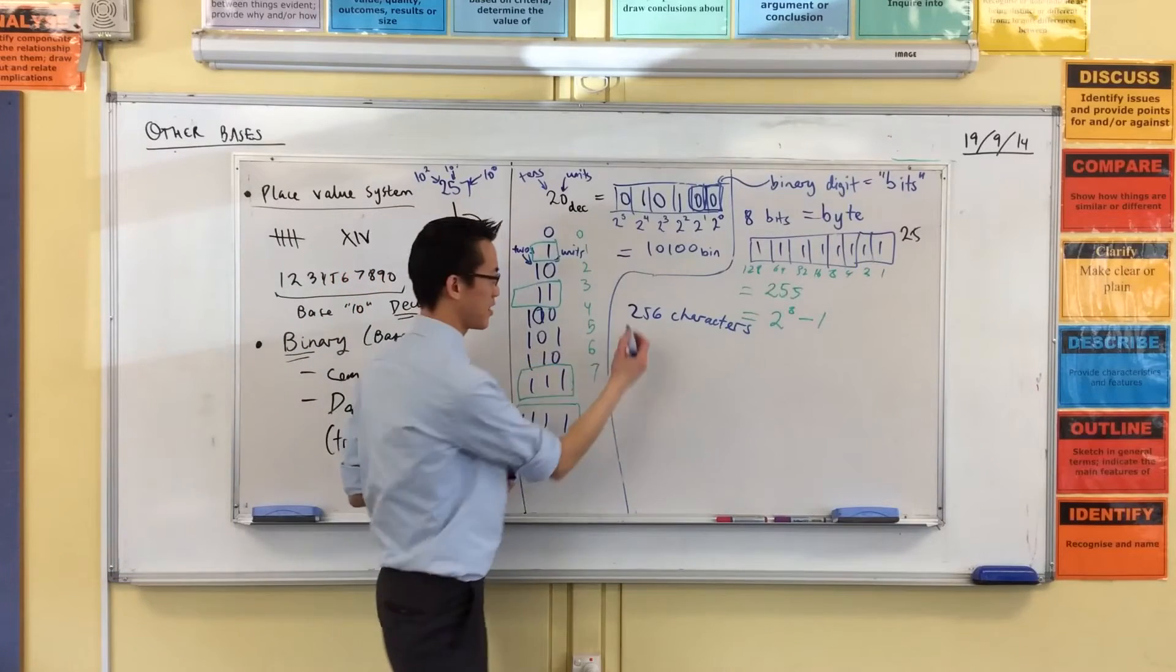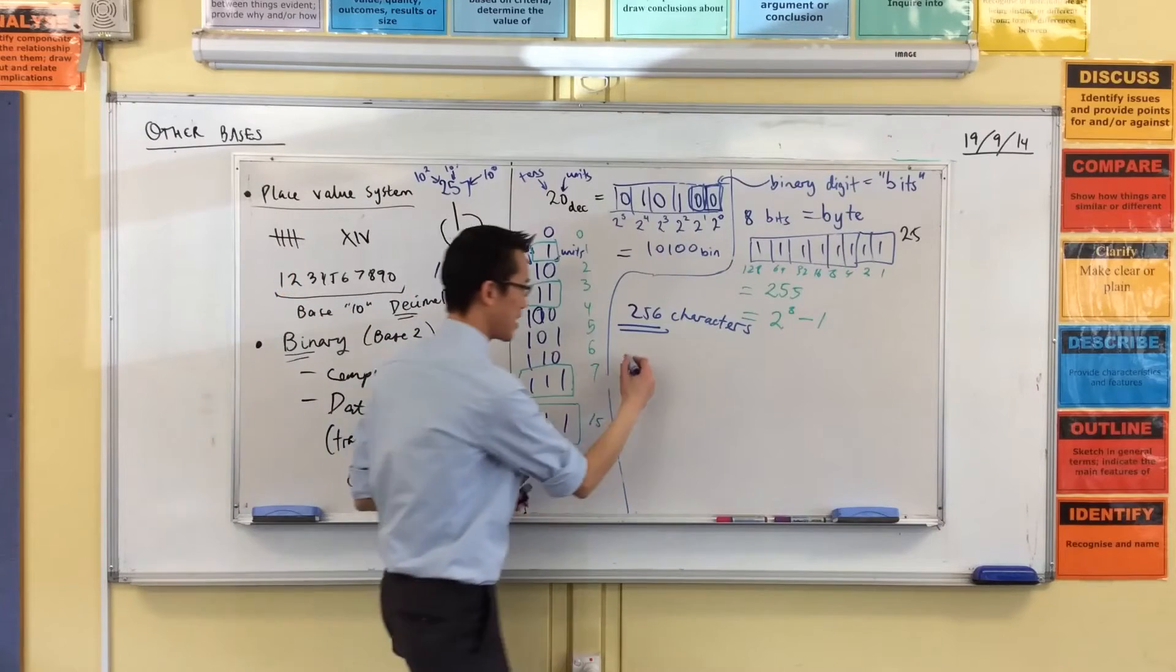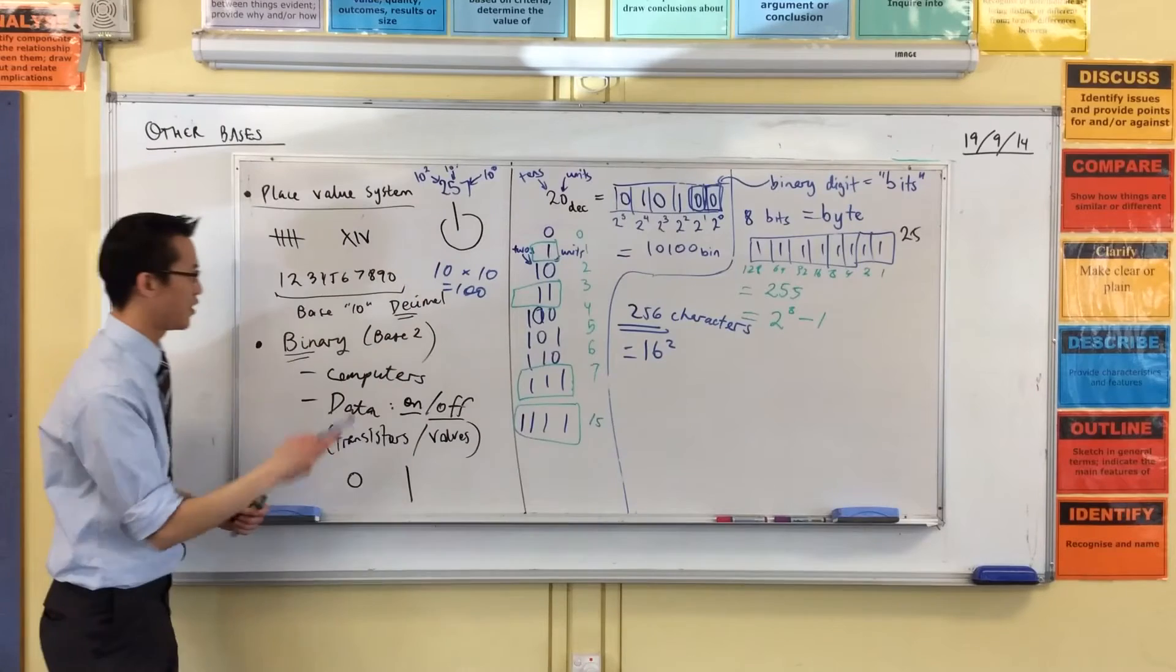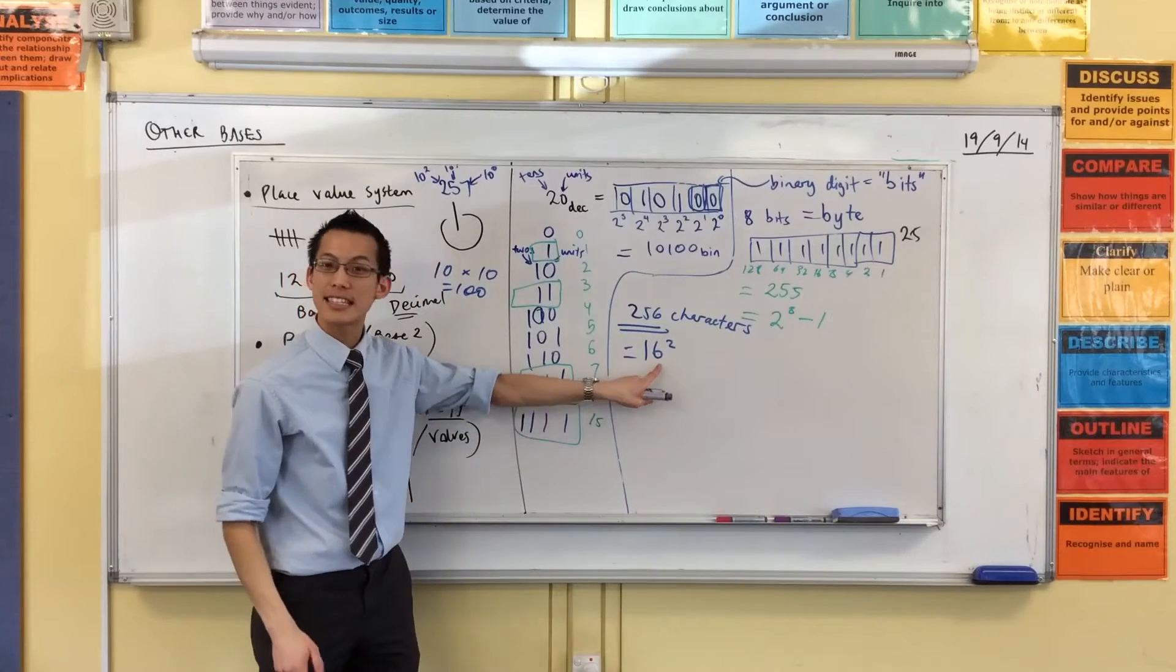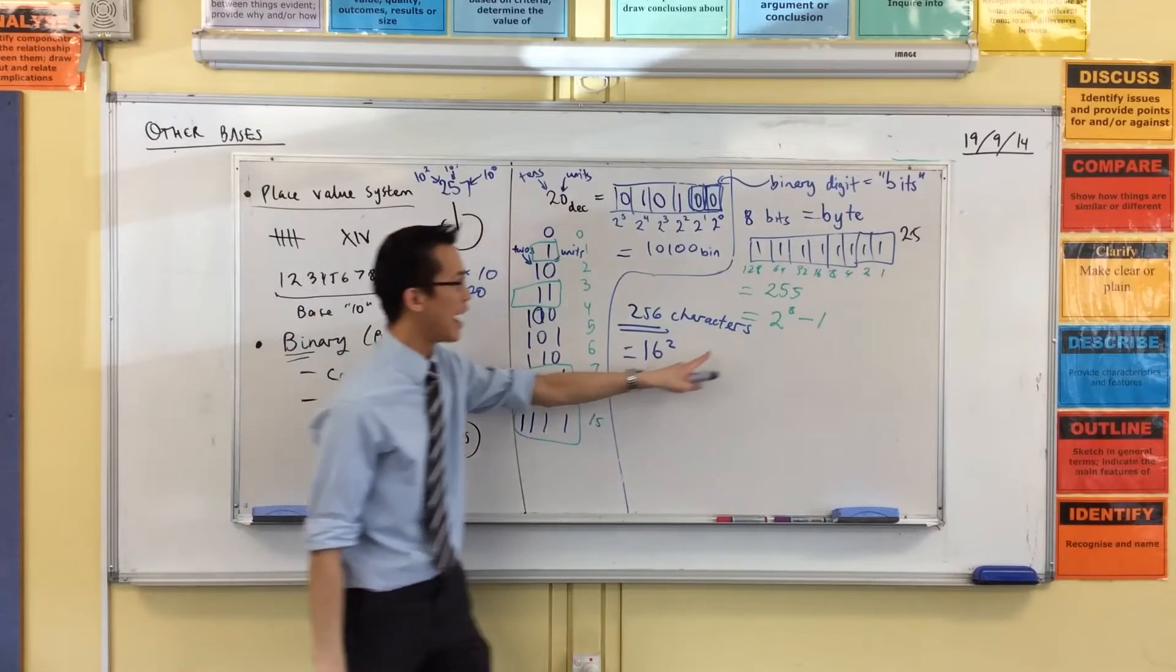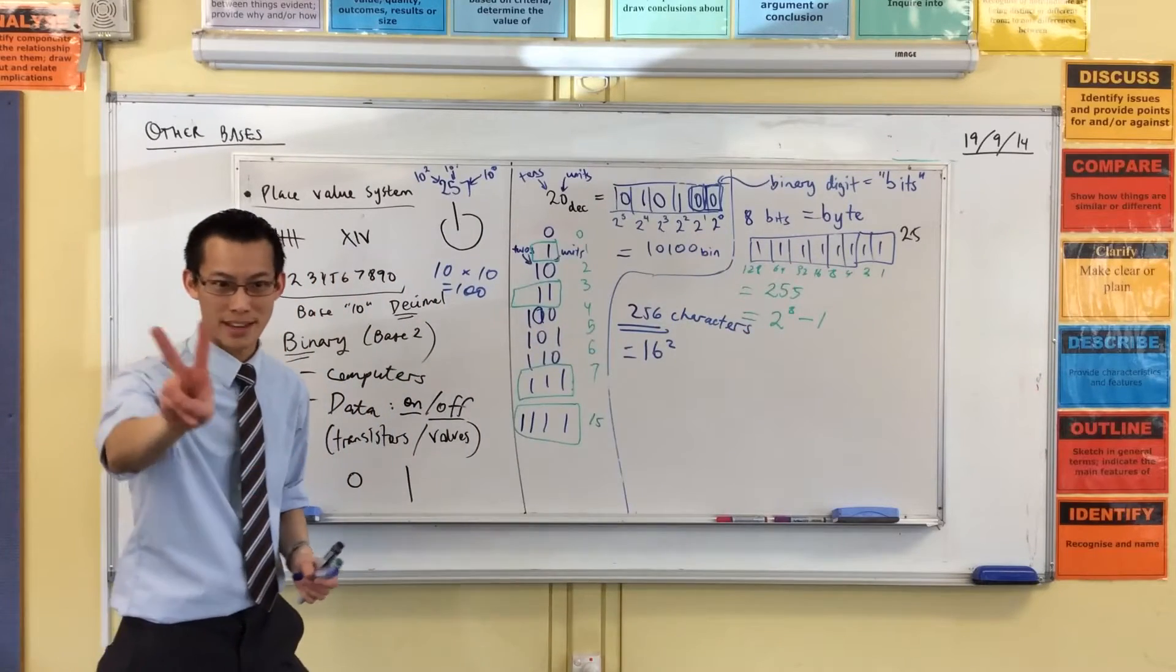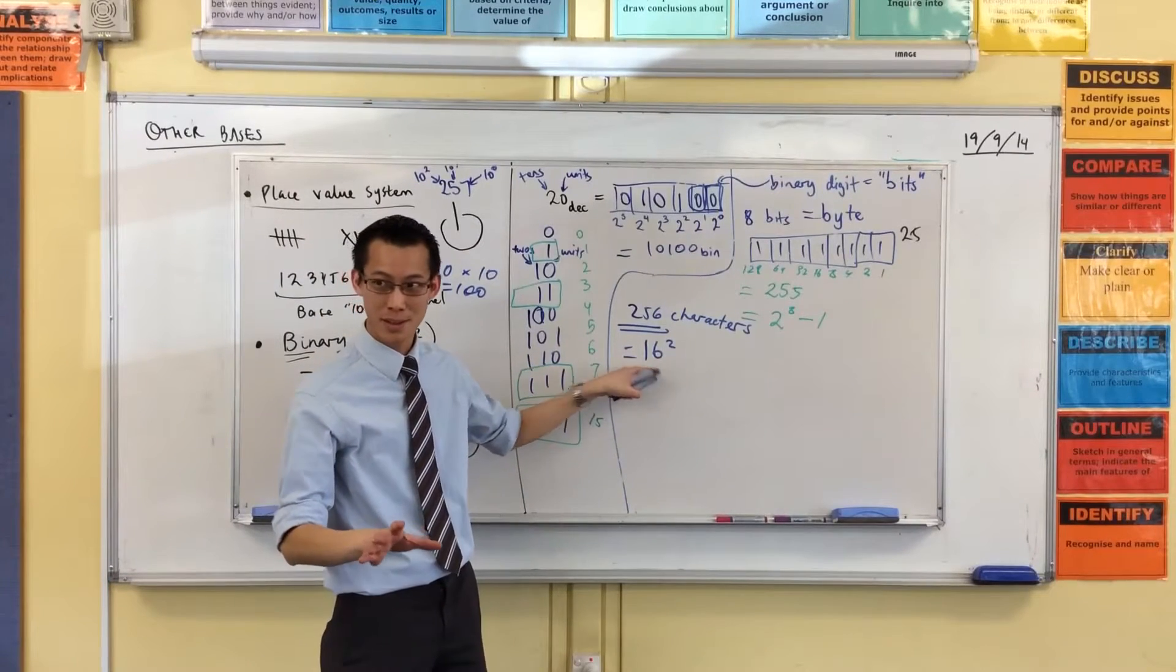If I have 256, 256 is a square number, right? What's it equal to? It'll be 16. So if I had a base 16 system, I could represent all 256 of these characters with two letters, two characters, each of which have 16 different possibilities.